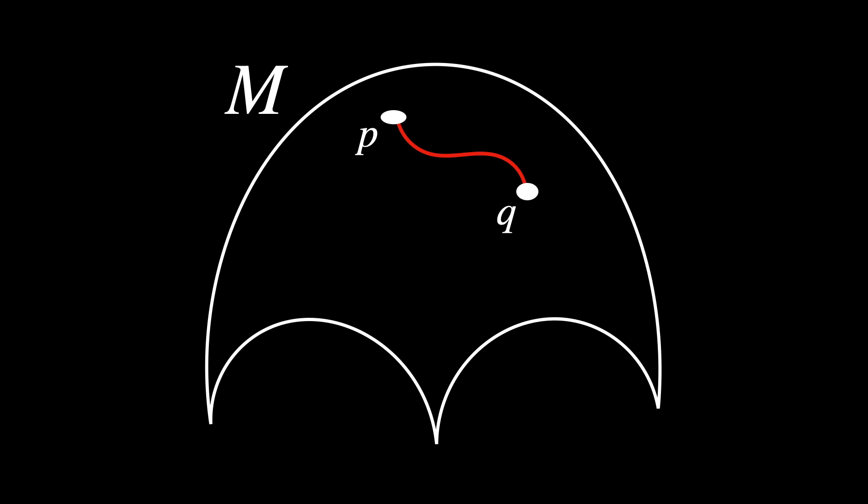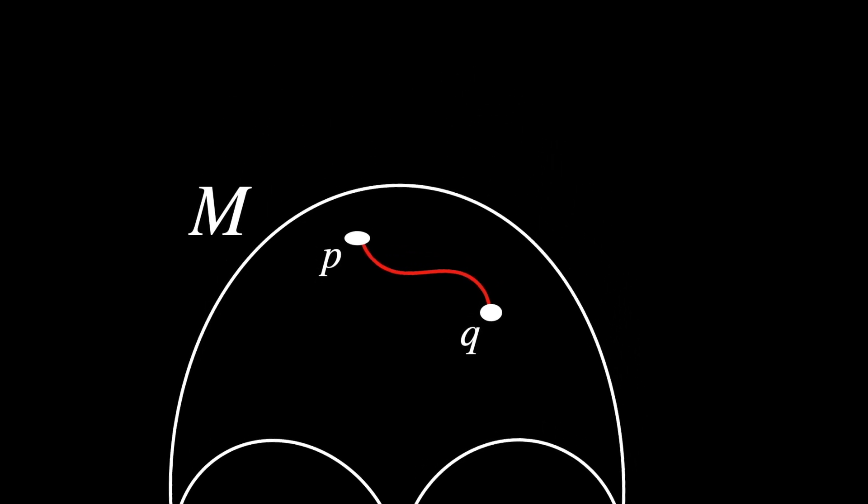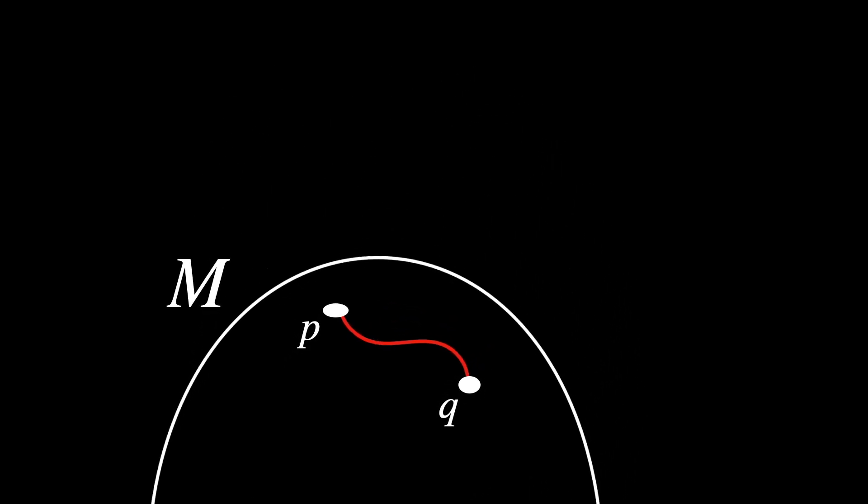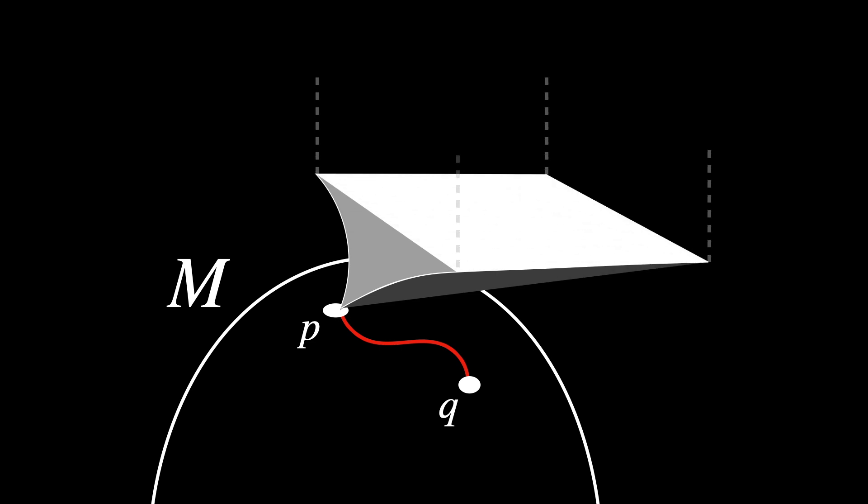But here is an interesting catch. Vectors can't directly poke out of the points because there is nothing to poke out into. Remember, all of these points are on a manifold, not embedded in a space. There is no outside looking in perspective. It just exists by itself. So in order to draw a vector poking out of a point, say P, we have to use a tangent space.